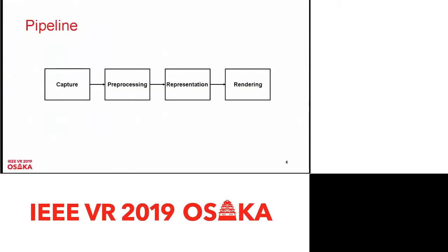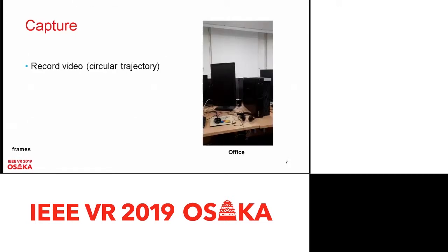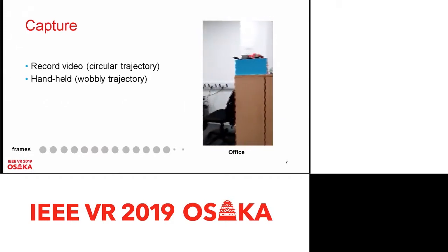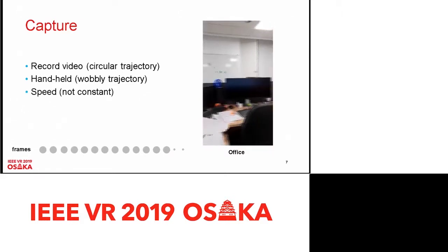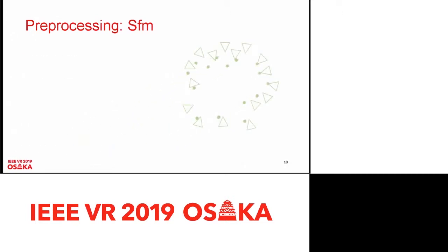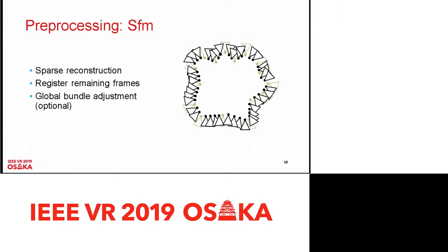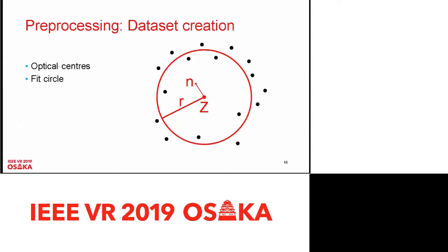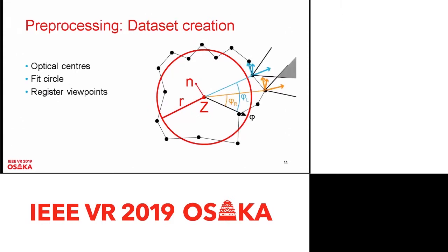Our pipeline consists of four big stages, starting with capture. We always record a video on a circular trajectory — handheld — resulting in a wobbly trajectory and non-constant capturing speed due to human factors. In preprocessing, we subsample frames and perform sparse reconstruction using COLMAP, register all remaining frames to the sparse reconstruction, and optionally perform global bundle adjustment. For dataset creation, we get extrinsics from COLMAP with optical centers depicted as black dots, fit a circle to these centers, and register all viewpoints according to the circle, giving each viewpoint a unique polar angle. We then establish correspondences between image pairs using optical flow.